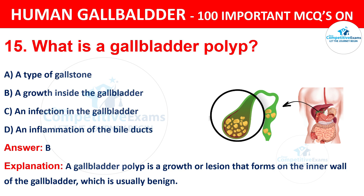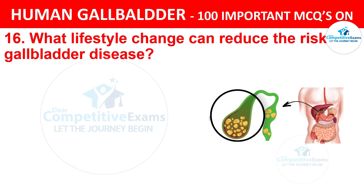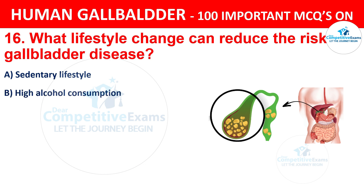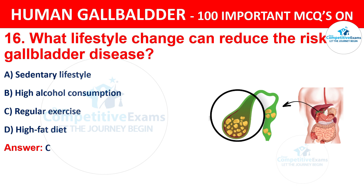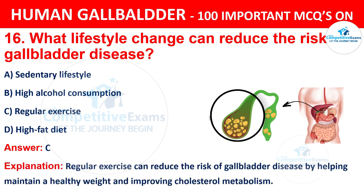Question 16: What lifestyle change can reduce the risk of gallbladder disease? The options are: A) Sedentary lifestyle, B) High alcohol consumption, C) Regular exercise, D) High fat diet. The correct answer is C, regular exercise. Regular exercise can reduce the risk of gallbladder disease by helping maintain a healthy weight and improving cholesterol metabolism.